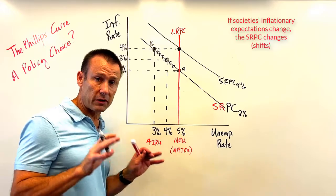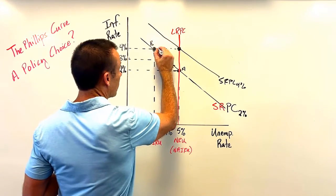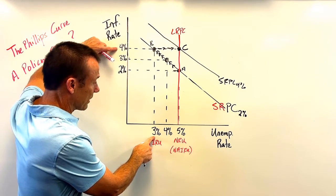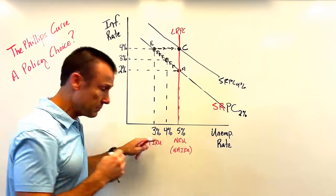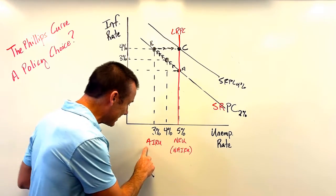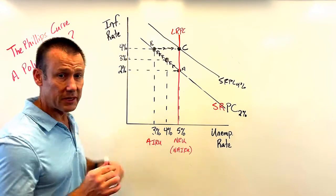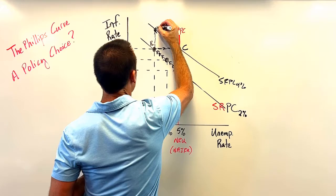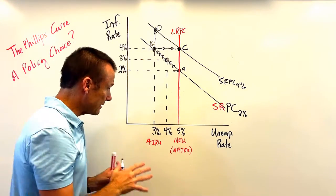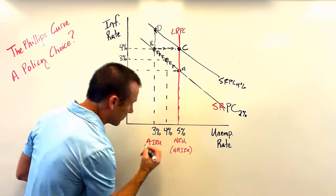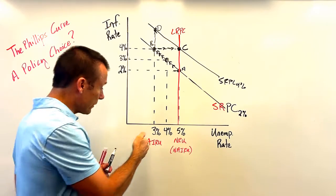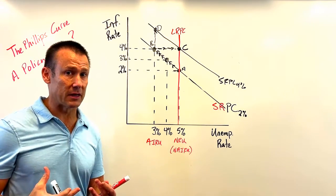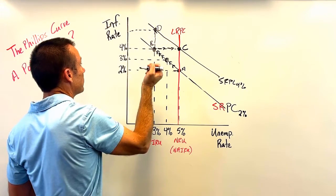Now here's basically what's going to happen: either our policy authorities ease up on expansionary policies and we head back to the natural rate at point C — we could not stay at 3% and 4% — or they continue to try to stimulate at 3%. But 3% is an AIRU; if they insist on keeping us there, the inflation rate will begin to accelerate upwards. Either we head back to C with foot off the gas, or keep the foot on the gas and inflation accelerates.